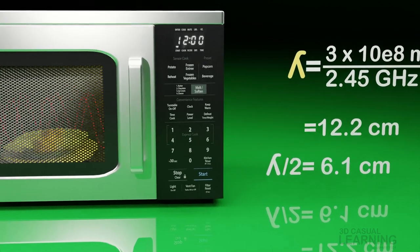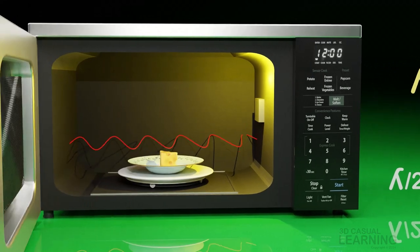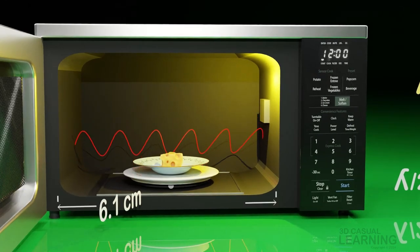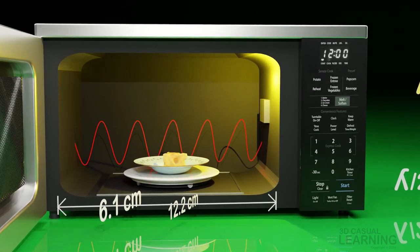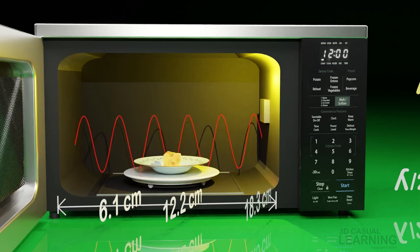It means that the distance between the walls can be 6.1 cm, 12.2 cm, 18.3 cm, and so on.